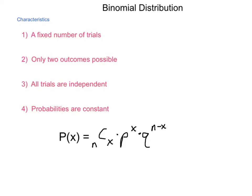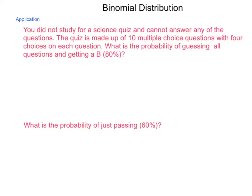Let's take a look right away at how we can apply this concept into a situation. You did not study for a science quiz and cannot answer any of the questions when it's passed out to you. This quiz is made up of 10 multiple-choice questions with four choices on each question. Of course, of those four, only one is correct. What is the probability of guessing all questions and getting a B or an 80%?